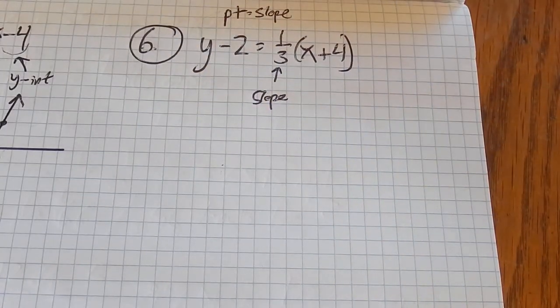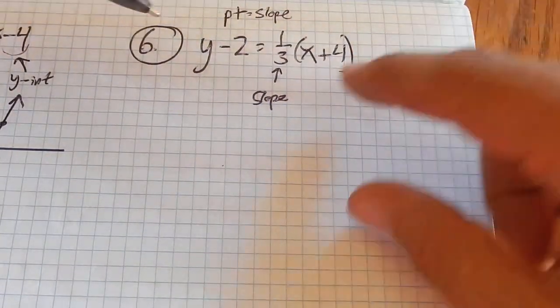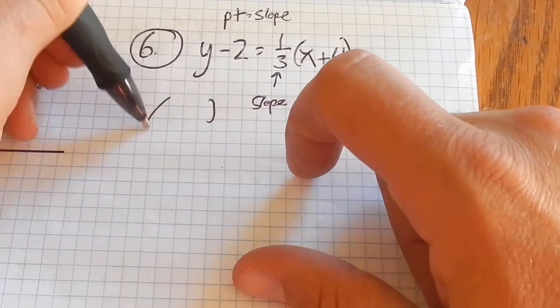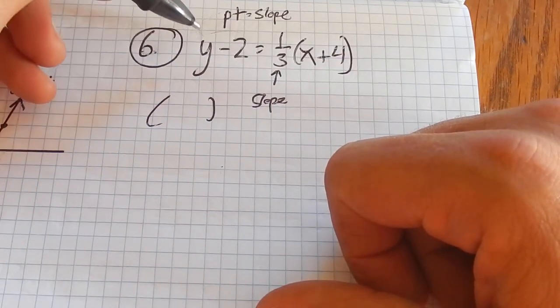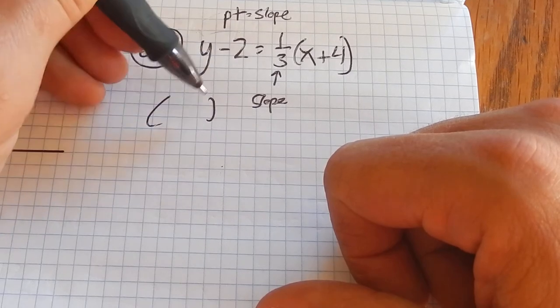And in order to find a point that it goes through, I'm going to think about making this 0. So, what y value would make this left-hand side equal 0? Positive 2. Notice if I plug in positive 2, 2 minus 2 is 0.